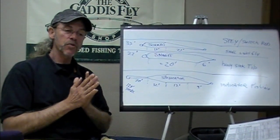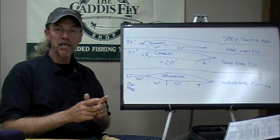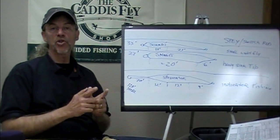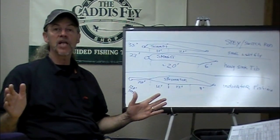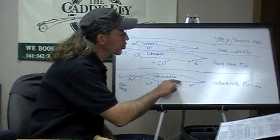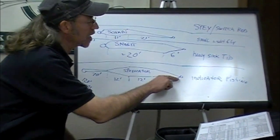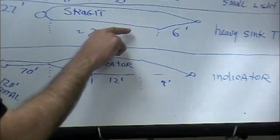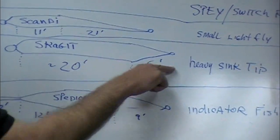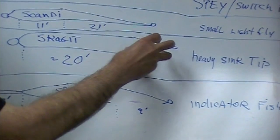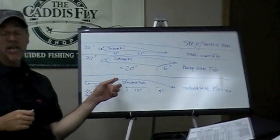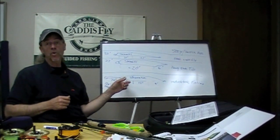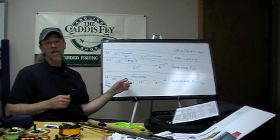I think if you were to throw an Airflo Polyleader or a RIO Versileader, they're not real heavy—that could work. The trick is throwing a sink tip. You've got a 9-foot taper here. On a Skagit line, you've got a 6-foot taper that's much more abrupt and heavier. I don't think anybody could cast 12 feet of T-14 on a speydicator.